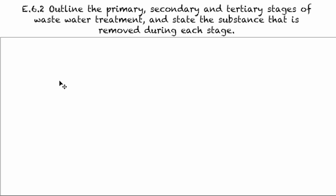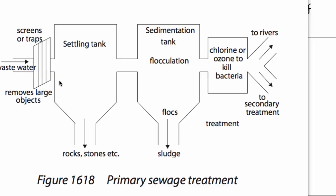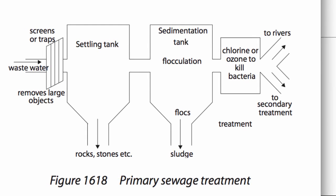Welcome to E6.2. Today we're gonna outline primary, secondary, and tertiary stages of wastewater treatment, and state the substance that is removed at each stage. So this is basically to prevent water pollution. We can actually do that by treating our water. So I'm gonna start off with the primary. And here's a very simple diagram. Basically, you take your wastewater in.